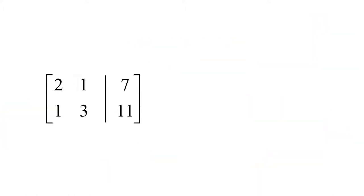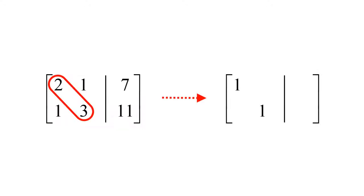We use elementary row operations, which are row-wise operations since each row represents a linear equation. The first elementary row operation is the row multiplying operation. Typically, we use it to reduce the diagonal elements to 1s by dividing each row by its diagonal element. Making diagonal elements 1s is important since we use them as pivot points to eliminate off-diagonal elements by making them zeros. The second is the row adding operation, used to reduce off-diagonal elements to zeros by subtracting rows from each other. Making off-diagonal elements zero means we decouple unknowns from each equation.